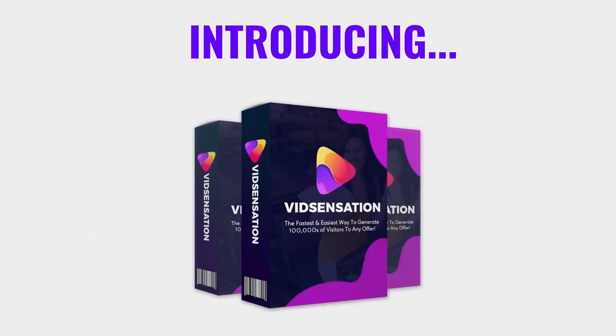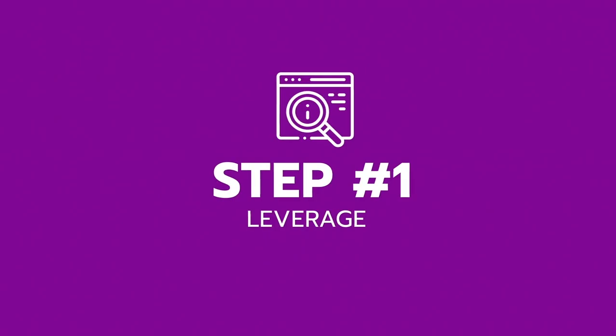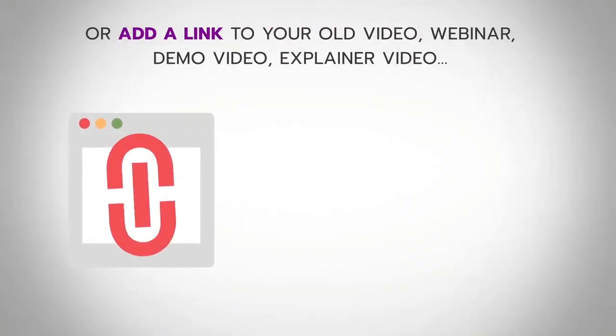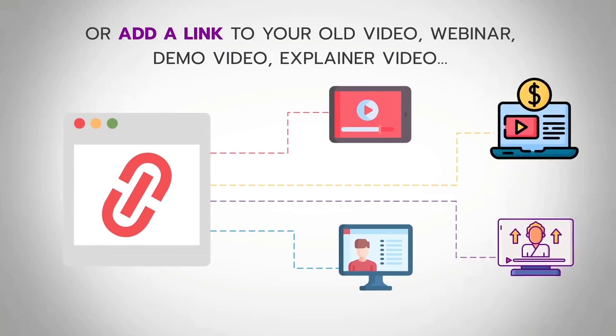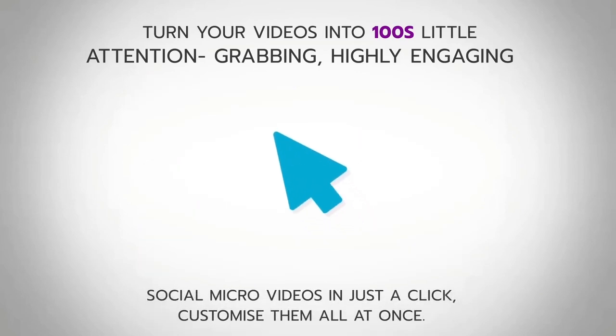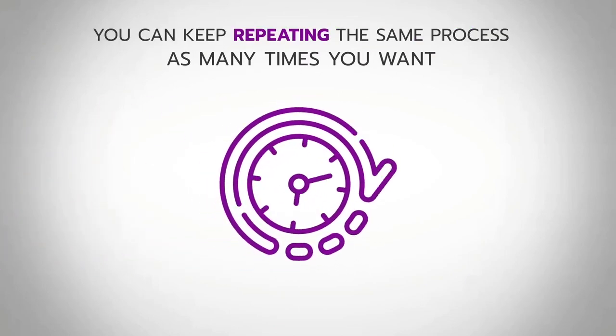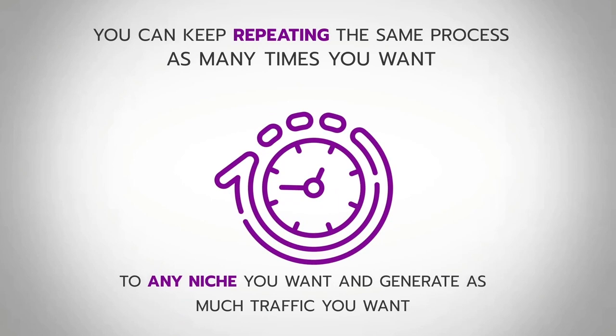Allow me to introduce VidSensation. It's as quick as 3 simple steps. Step number 1: Leverage — find a viral video in your niche, or add a link to your old video, webinar, demo video, explainer video, or any kind of video you want to use. Step number 2: Multiply 100 times — turn your videos into hundreds of little attention-grabbing, highly engaging social micro-videos in just a click, and customize them all at once. Step number 3: Profit — add your link and publish right away to Facebook and Instagram, or schedule for weeks and months, keep generating traffic hands-free. You can keep repeating the same process as many times as you want, to any niche you want, and generate as much traffic as you want.